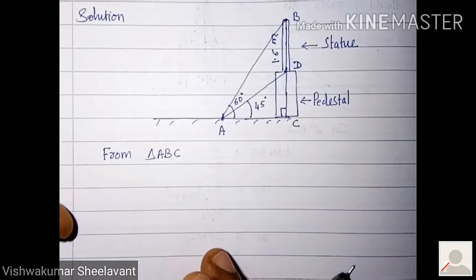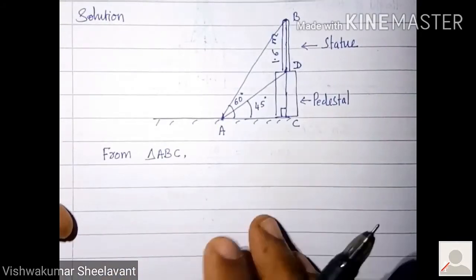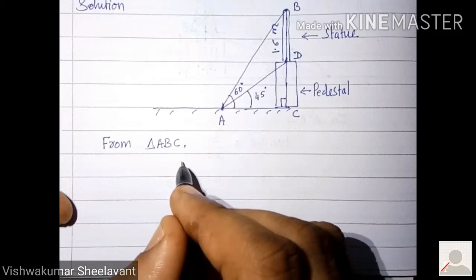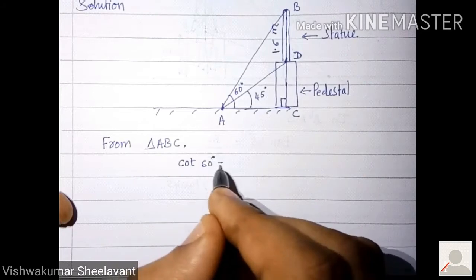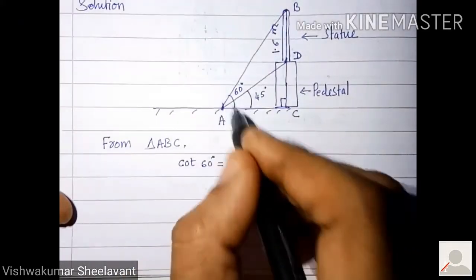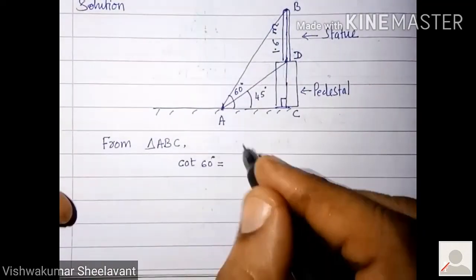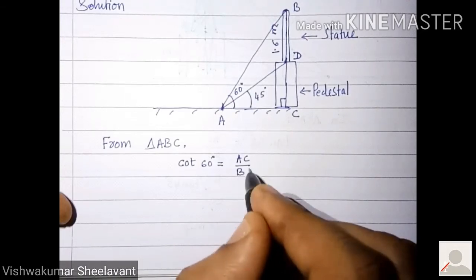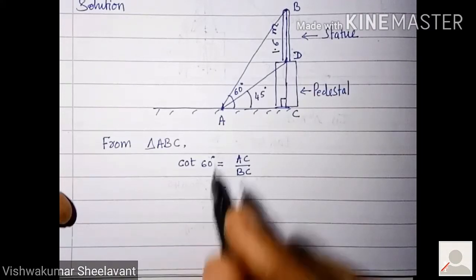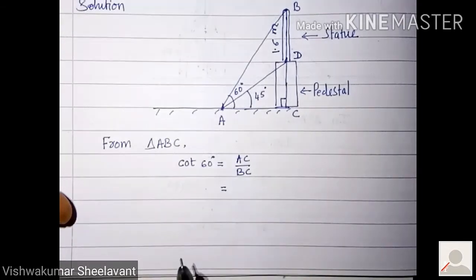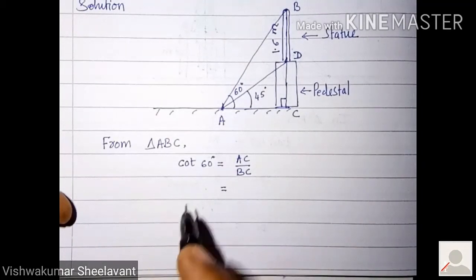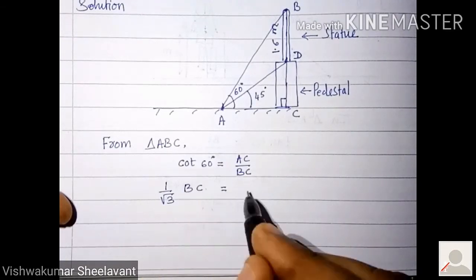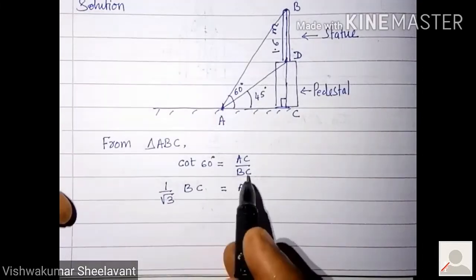From triangle ABC, cot 60 degrees equals AC upon BC. Angle A is 60 degrees, adjacent side upon opposite side, that is AC upon BC. Cot 60 is 1 by root 3.